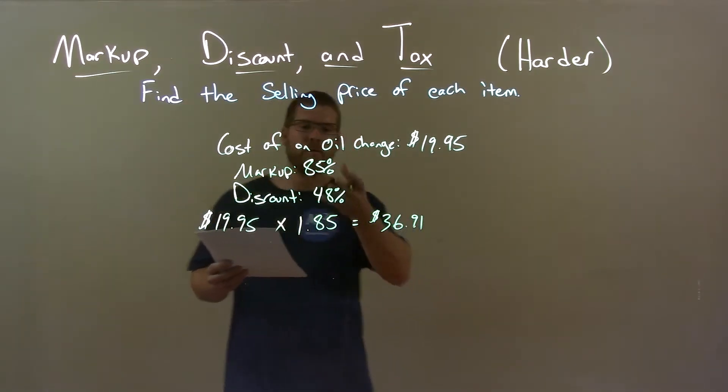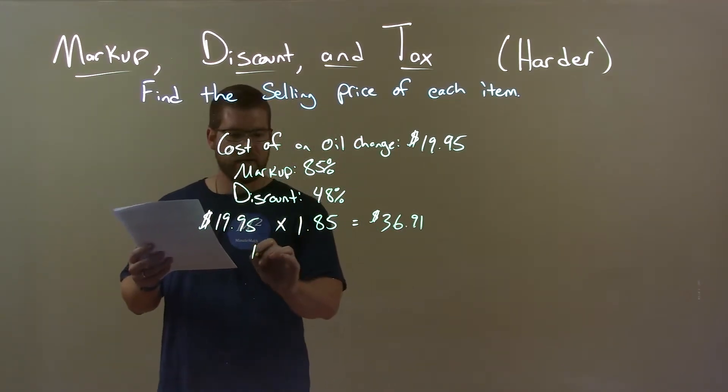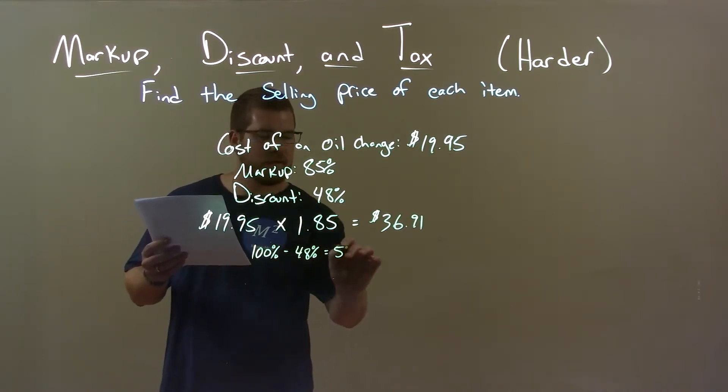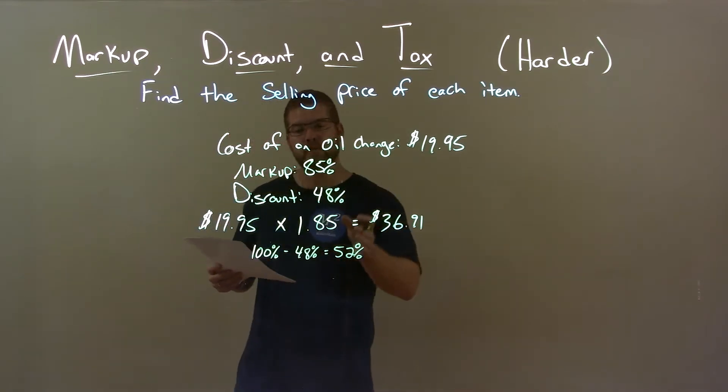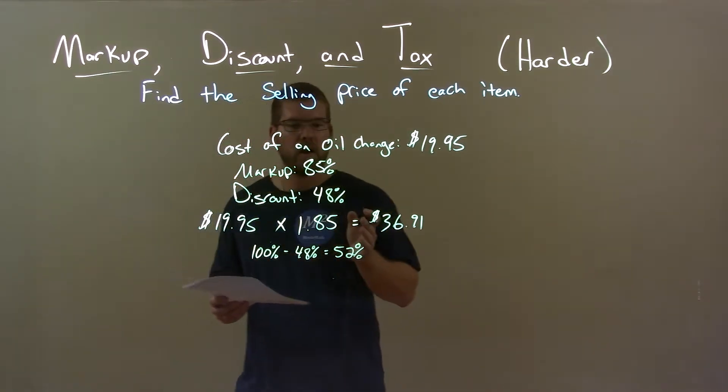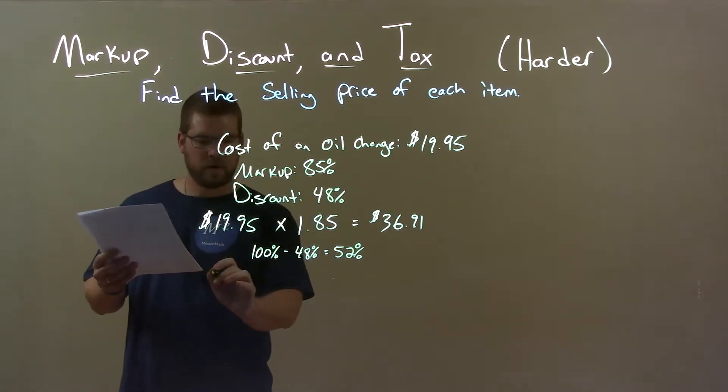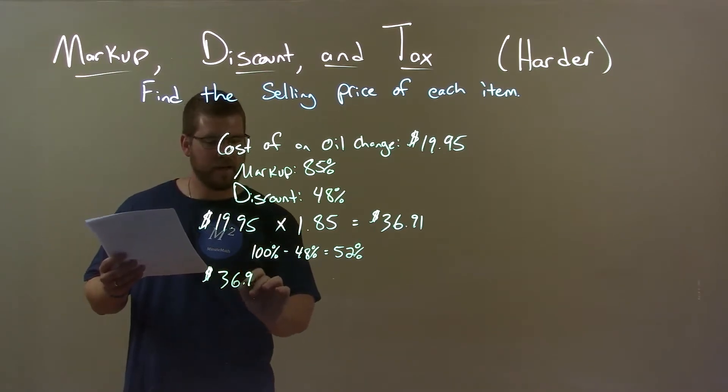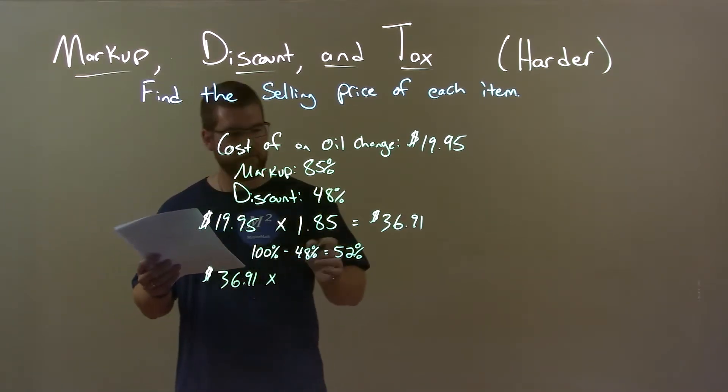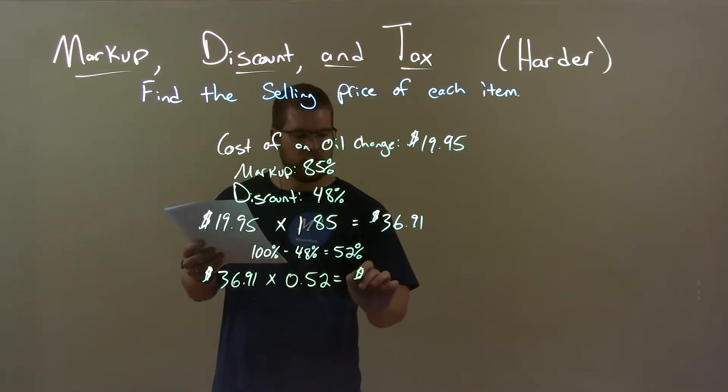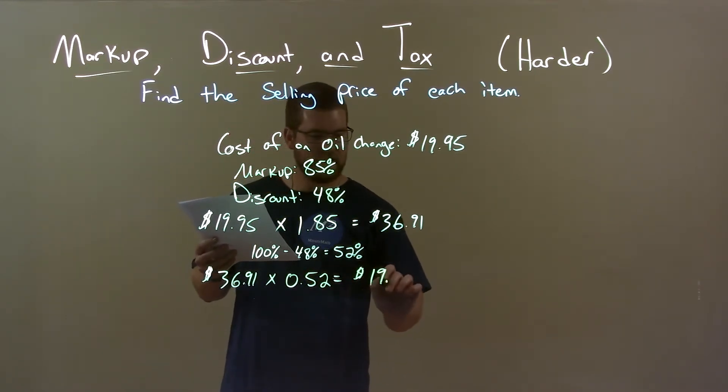Now, we have a discount of 48%, so to calculate that, take 100% minus the discount, 48%, which equals 52%. That means we're paying 52% of the after-markup cost. So we take $36.91 and multiply that by 52% as a decimal, 0.52, and that gives us a final sale price of $19.19.